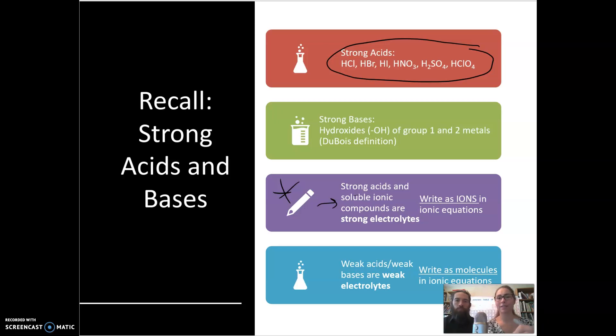If they're not strong, if it's an acid and it's not strong, it's a weak acid and we call those weak electrolytes. We will not be breaking apart the weak electrolytes in the ionic equations. We will write those as molecules, but the strong electrolytes we're going to break apart into ions.